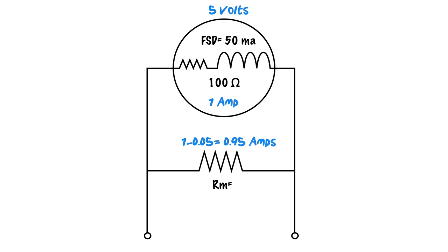And if you don't understand why that is, make sure you go watch the video on Kirchhoff's current law. But our current needs to split off across these branches. So now we know that we have 0.95 amps running across here when we have full value.